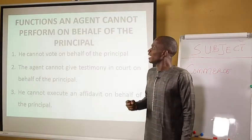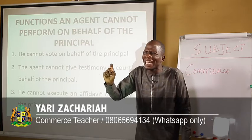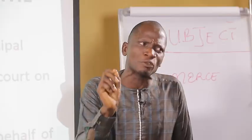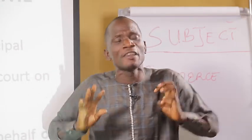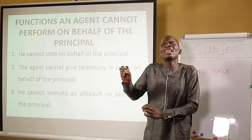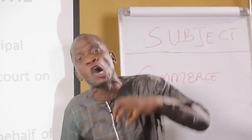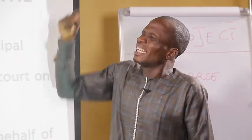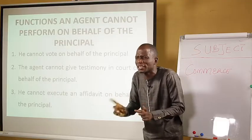The third item we are going to look at is functions an agent cannot perform on behalf of the principal. In our previous lesson we treated types of agents. Under the types of agents we made mention of universal agents. A universal agent is a type of agent that is given unlimited or unrestricted power to act on behalf of the principal. Even with that unrestricted or unlimited power, an agent cannot perform everything on behalf of his principal.